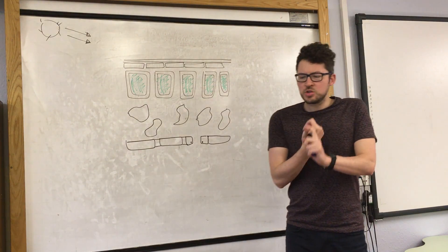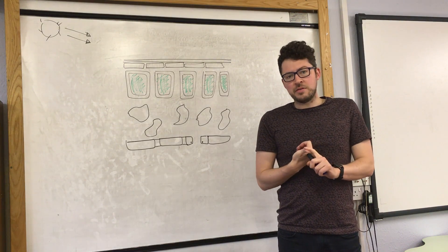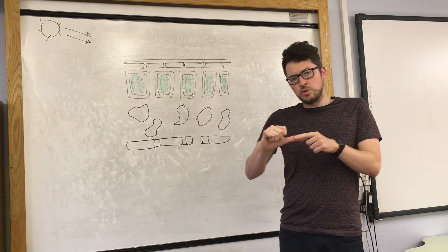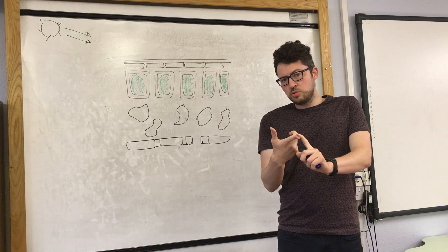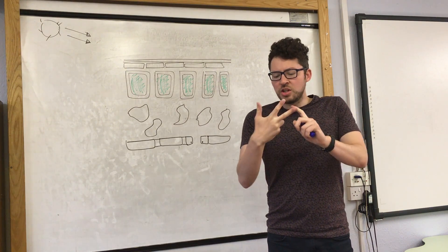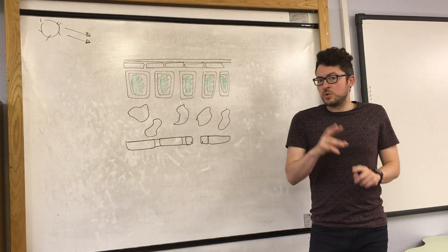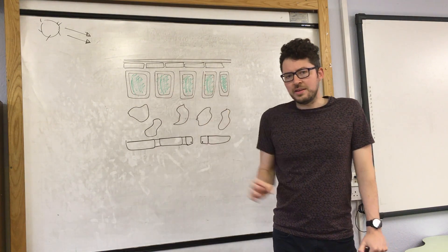Now firstly, I'm just going to let you know about a few plant organs that you need to be aware of. Plant organs include the stem, the roots, and the leaves. You don't need to know the details of the stem and the roots, but you do need to know the detailed structure of a leaf.